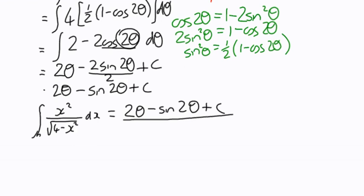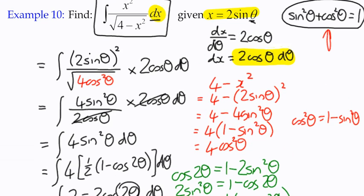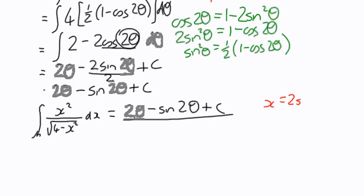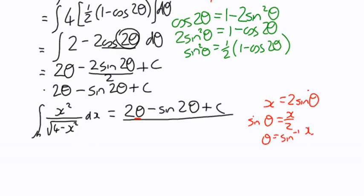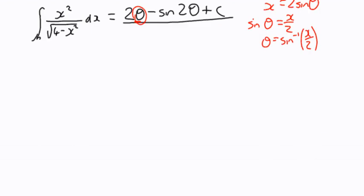To substitute back: from x = 2sinθ, we get sinθ = x/2, so θ = sin⁻¹(x/2). For sin2θ, we use the identity sin2θ = 2sinθ cosθ. We already know that 2sinθ = x, so that part is straightforward.